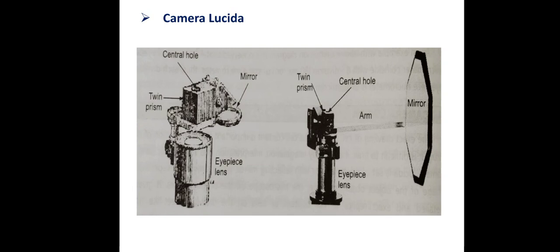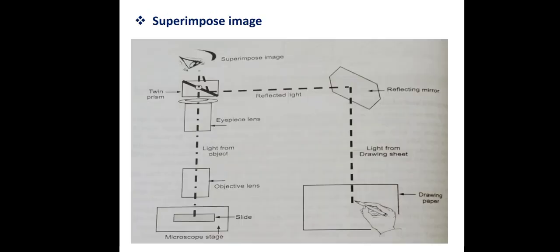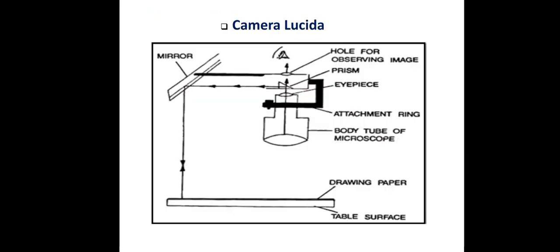In the Camera Lucida diagram, you can see there is a central hole, a mirror, twin prisms, and an eyepiece. Then there is the attachment ring connecting to the body tube of the microscope, and on the table surface there is the drawing paper.